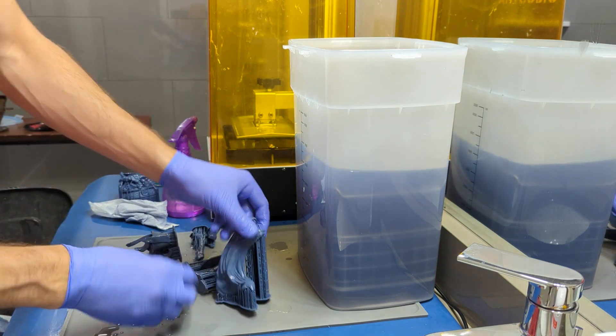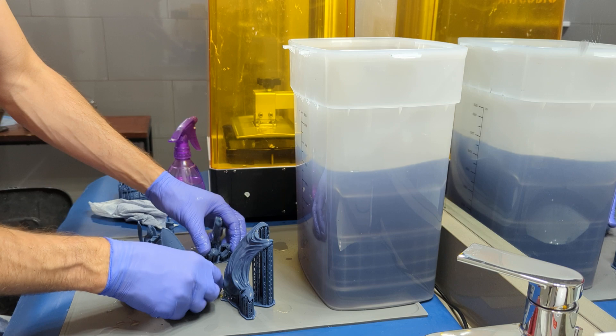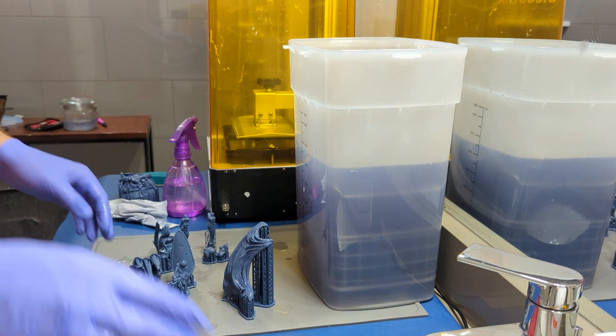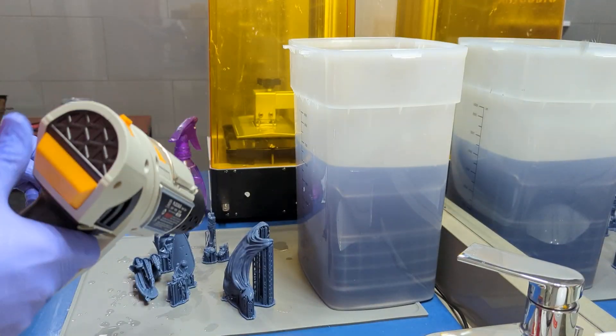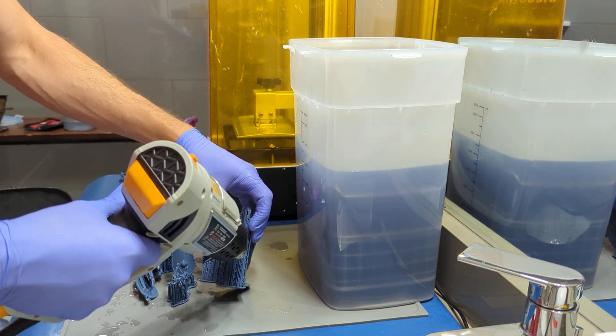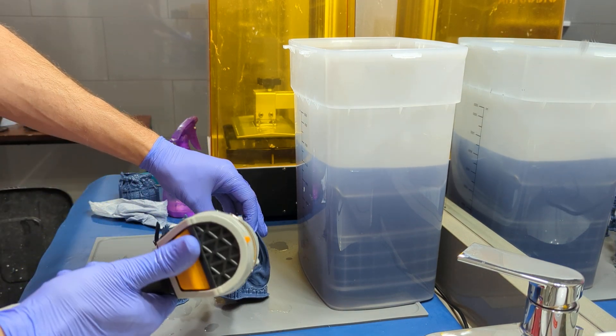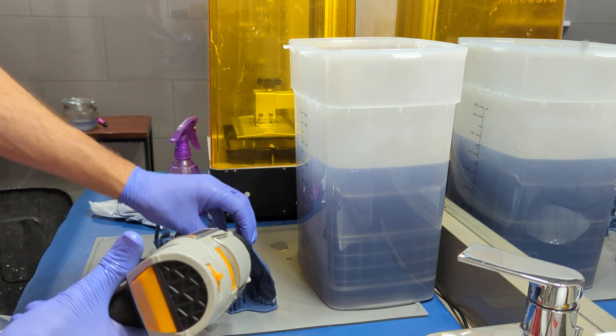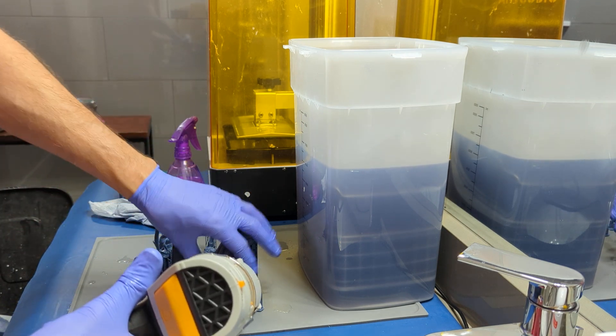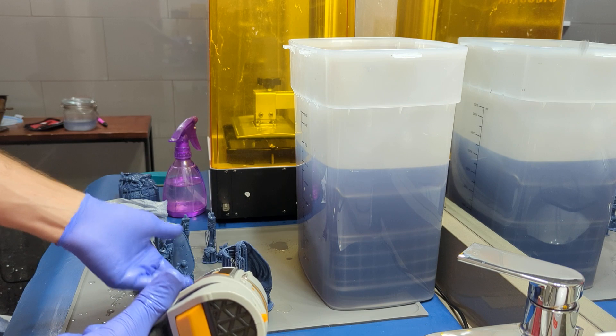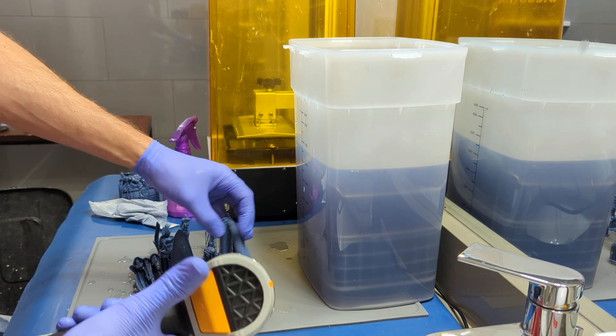So now my prints are pretty much clean but they're stuck with all the supports. So now what I'll do is I'll grab my heat gun and start aiming it at the supports. So I aim it where the supports meet the model. I'm not trying to dry the model. I'm not trying to dry the supports. I'm trying to weaken where the supports come in contact.